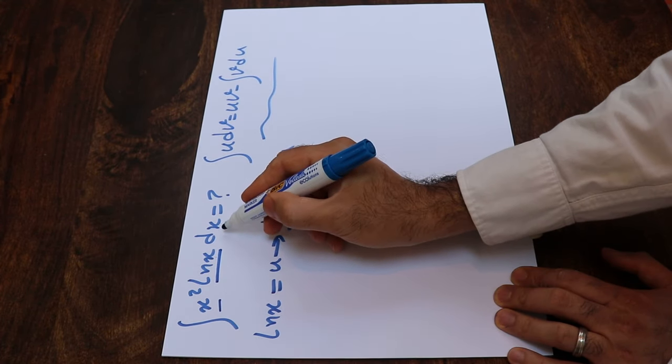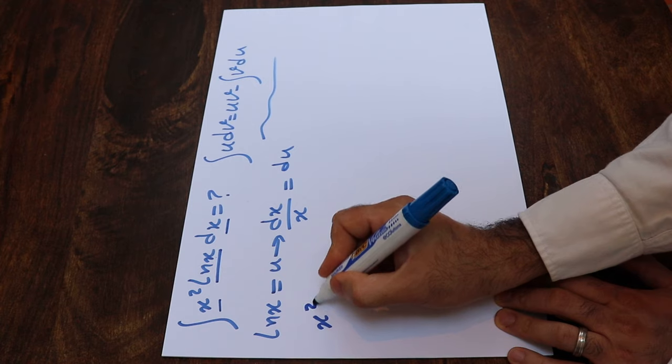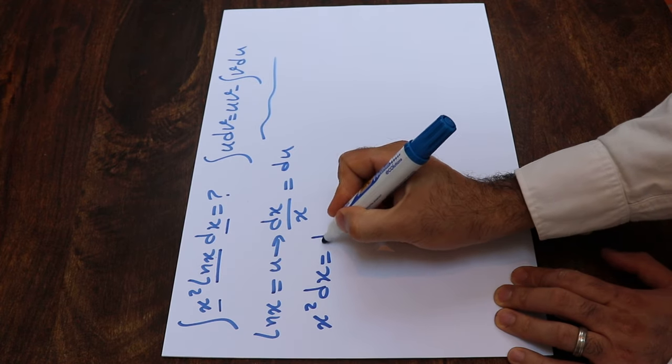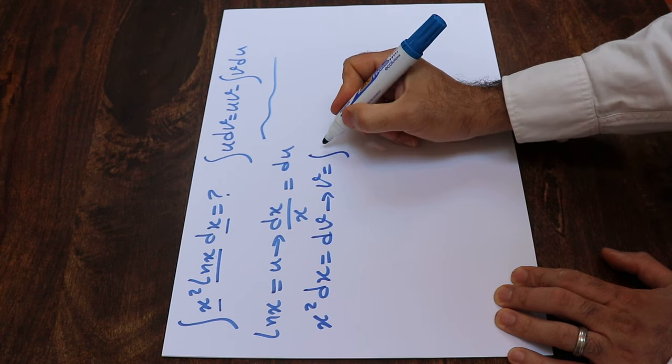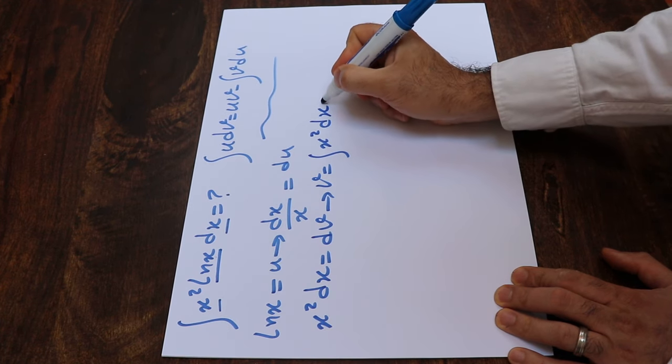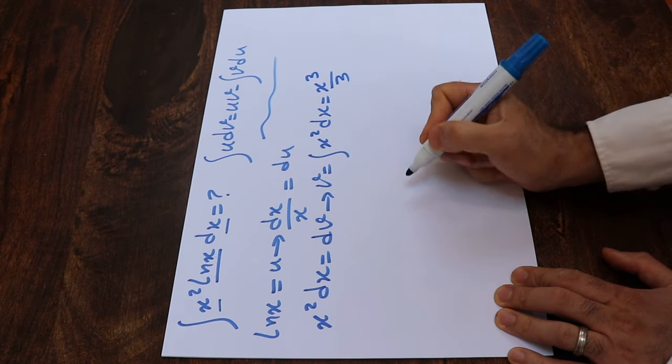Also, I define x² dx as dv, therefore v will be equal to the integral of x² dx, which will be equal to x³ divided by 3.